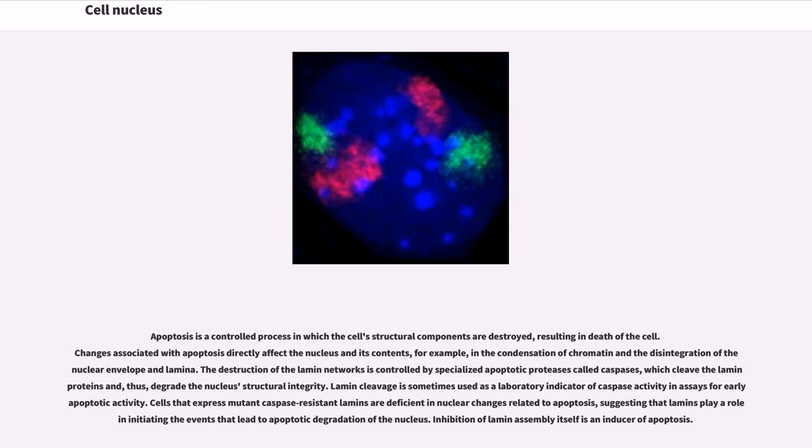Apoptosis is a controlled process in which the cell's structural components are destroyed, resulting in death of the cell. Changes associated with apoptosis directly affect the nucleus and its contents, for example, in the condensation of chromatin and the disintegration of the nuclear envelope and lamina. The destruction of the lamin networks is controlled by specialized apoptotic proteases called caspases, which cleave the lamin proteins and, thus, degrade the nucleus' structural integrity. Lamin cleavage is sometimes used as a laboratory indicator of caspase activity in assays for early apoptotic activity. Cells that express mutant caspase-resistant lamins are deficient in nuclear changes related to apoptosis, suggesting that lamins play a role in initiating the events that lead to apoptotic degradation of the nucleus. Inhibition of lamin assembly itself is an inducer of apoptosis.